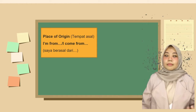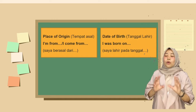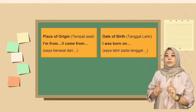Selanjutnya kita bisa menyebutkan date of birth atau tanggal lahir kita. For example, 'I was born on 17 June 1996.' Jadi, untuk menyebutkan 'saya lahir pada tanggal' dalam bahasa Inggris adalah 'I was born on.'